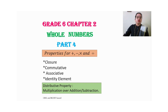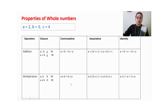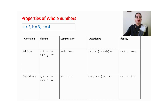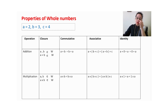We will cover addition, subtraction, multiplication, and division for the four properties: closure, commutative, associative, and identity element. Also distributive property — multiplication over addition and multiplication over subtraction. I have made one chart where we can easily understand all four properties. I have taken some values; you can take any number, but smaller numbers are easier for calculation.